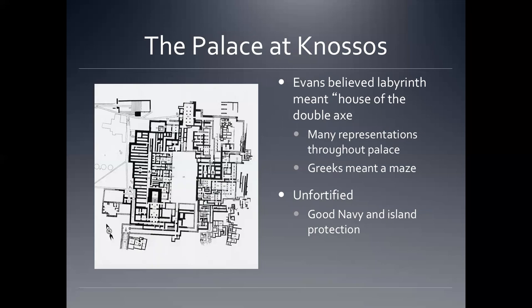Evans believed that the word 'labyrinth' meant 'house of the double axe,' and he found a bunch of representations throughout the palace. But what the ancient Greeks meant by labyrinth was a maze. What may have happened is ancient Greeks saw the ruins of this palace and thought it looked like a maze — and you can see from the parts excavated so far just a bunch of rooms leading in all different directions with narrow corridors, so it certainly seemed like a maze.